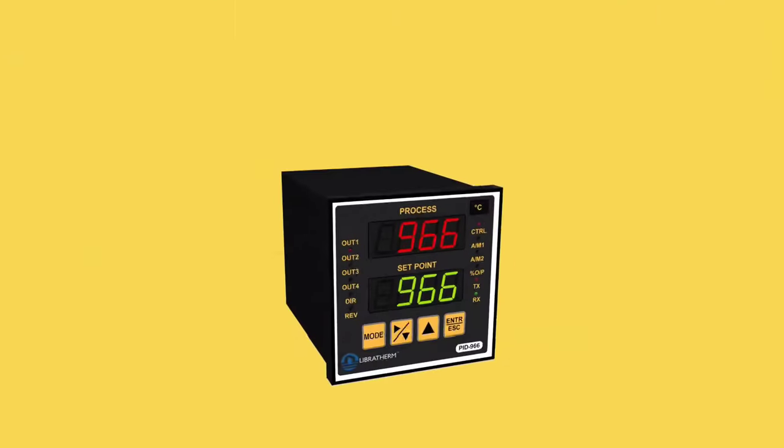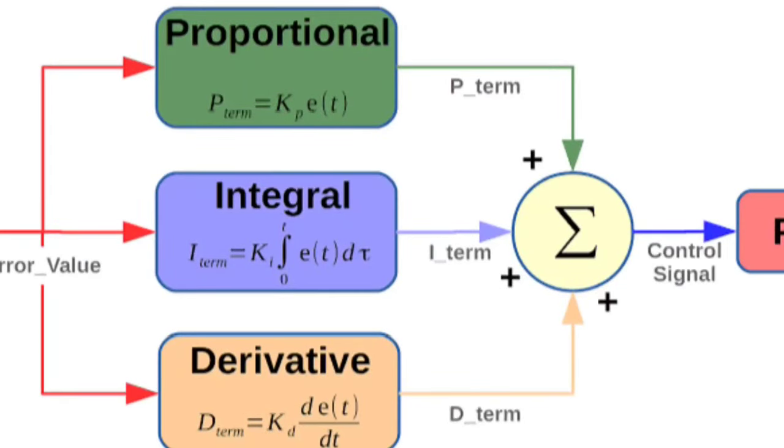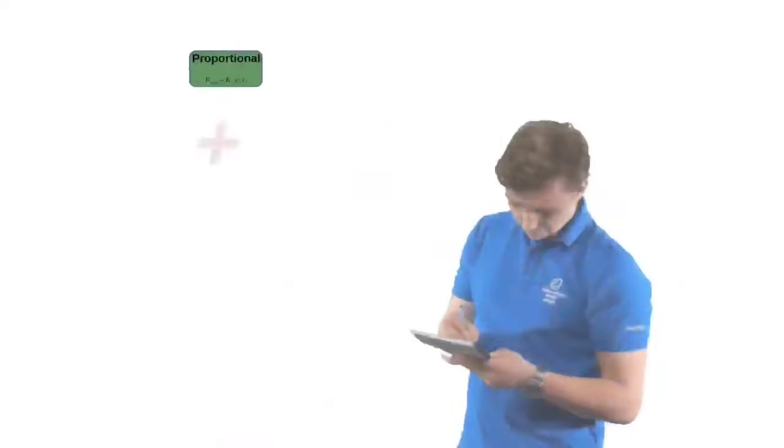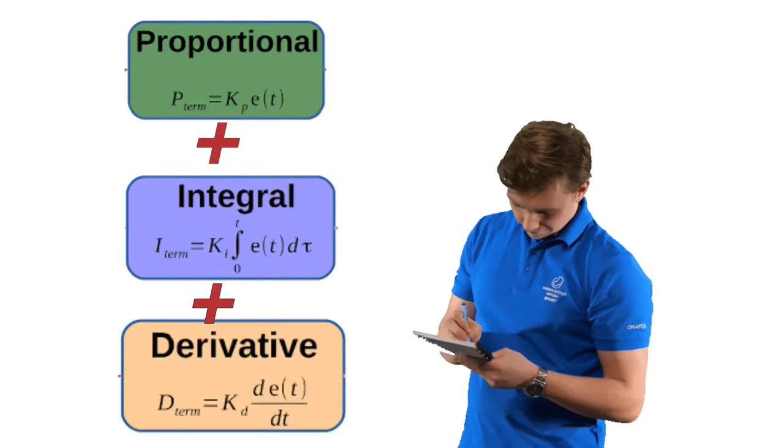Now, let us see the equation of PID controller. The equation of PID output is PID output equals KP multiplied by error, plus KI multiplied by sum of errors, plus KD multiplied by rate of change of errors. This equation helps us to calculate the output.